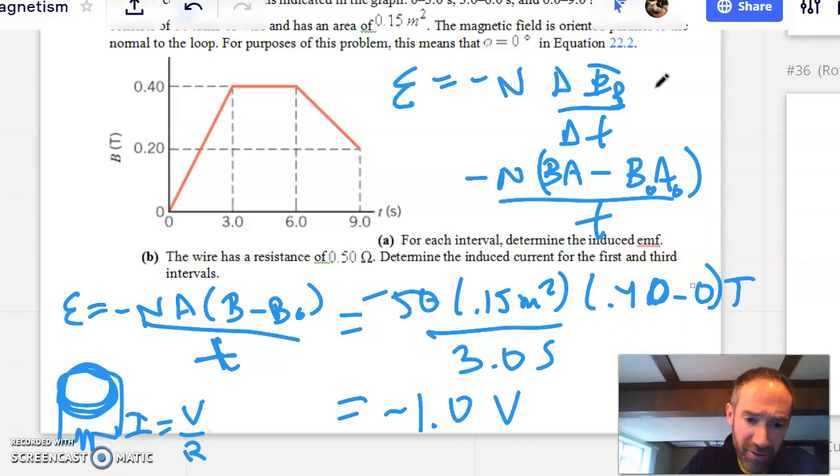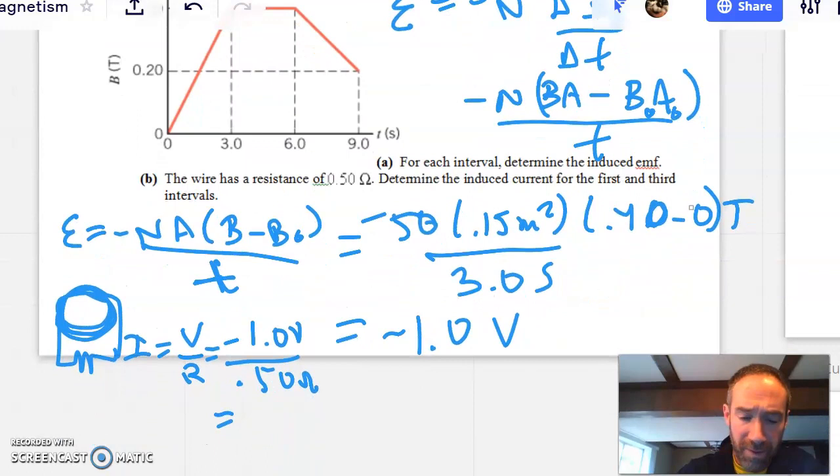If I knew that that resistance was 0.5 ohms, and the induced voltage here is negative one volt, then I know that the current is going to be the voltage divided by the resistance, negative one volt divided by the resistance of 0.5 ohms, and that's going to give me negative two ampere.